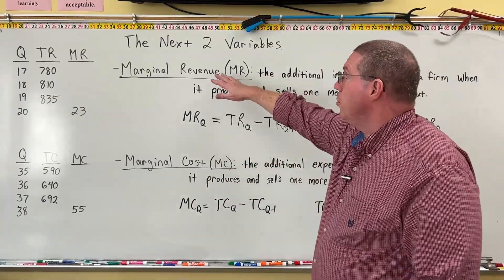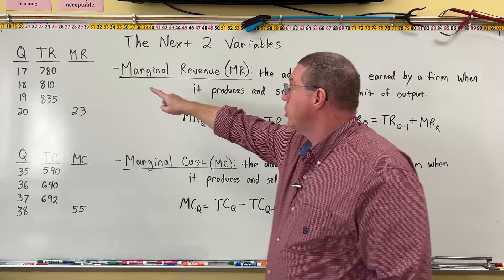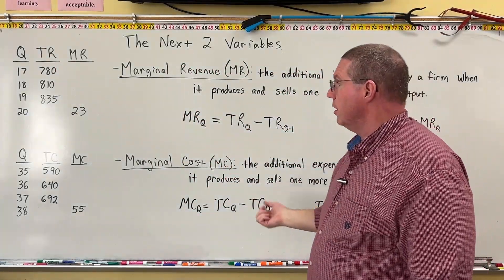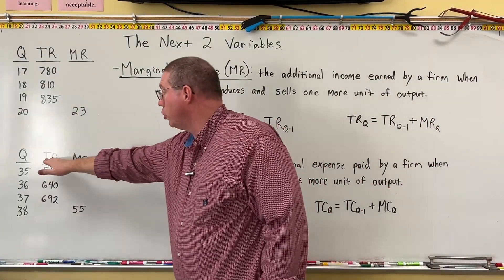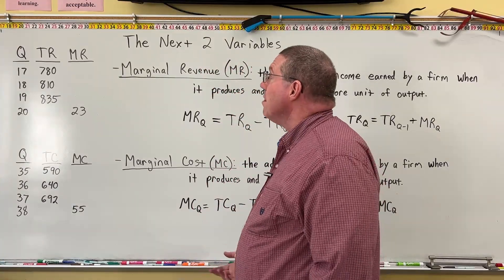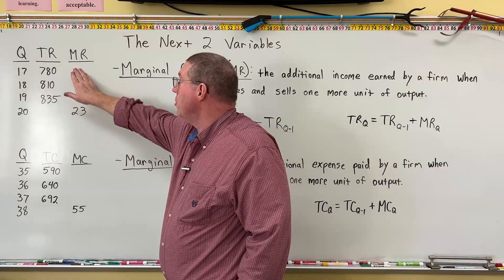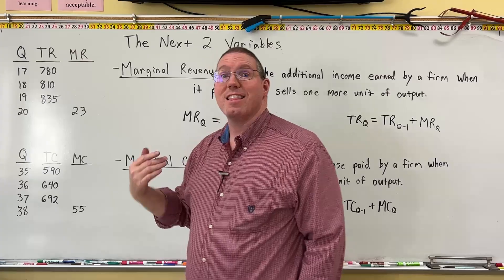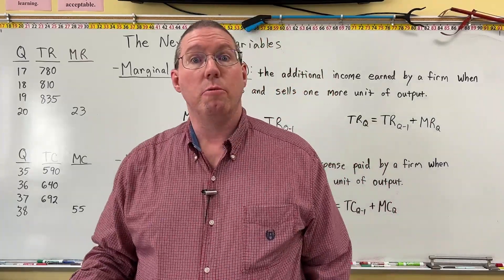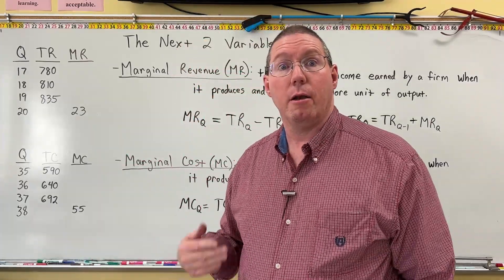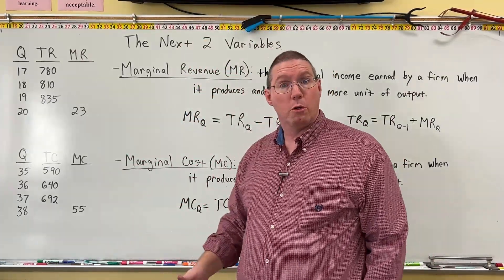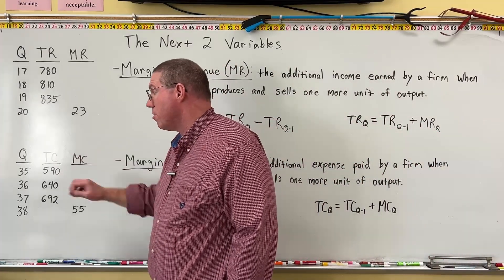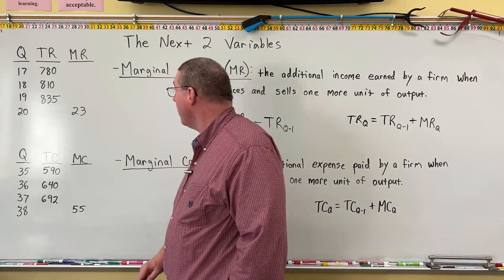Marginal revenue is related to total revenue, and marginal cost is related to total cost. The way that you calculate marginal revenue from total revenue is exactly the same as how you calculated marginal utility from total utility. And it's the same thing with marginal cost — use the exact same procedure.